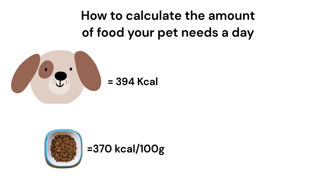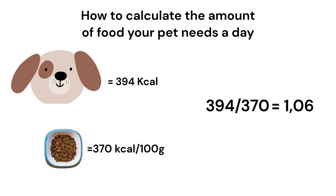So what we are going to do is take the dog's calorie need, which is 394, and divide it by the amount of calories in the dog food, which is 370 calories in this case. That gives us 1.06, and then we take 1.06 and multiply it by 100, which gives us 106.